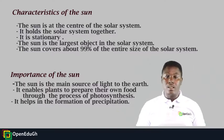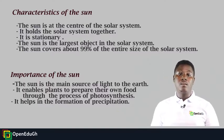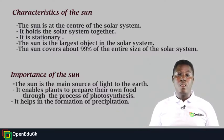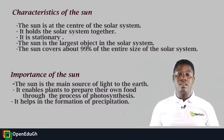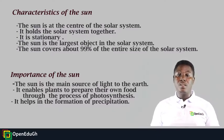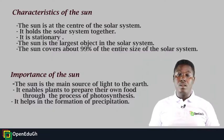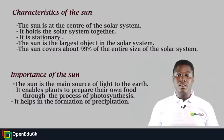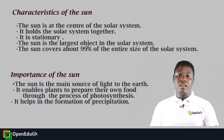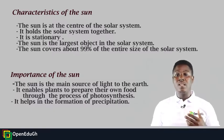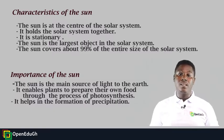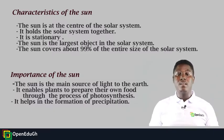Characteristics of the sun: The sun is at the center of the solar system and holds the solar system together. It is stationary, meaning all objects in the solar system revolve around it. The sun is the largest object in the solar system and covers about 99% of the entire size of the solar system.